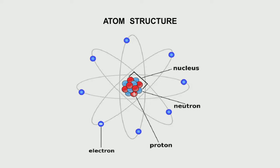Each element itself consists of many smaller particles called atoms. At the heart of the atom are the neutrons and protons, which provide mass. Electrons orbit around these protons and neutrons. The combination of protons and neutrons is generally referred to as the nucleus.